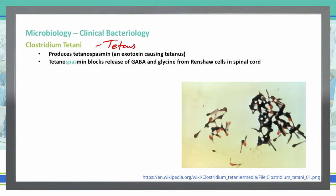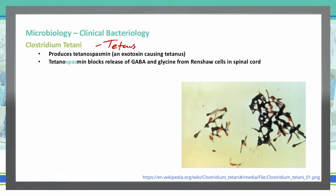Tetanospasm actually blocks the release of GABA and glycine from the Renshaw cells in the spinal cord. We are blocking GABA and glycine, which are inhibitory neurotransmitters, causing the spasm — an unregulated contraction of the muscles. You can see a picture here on the right, and these almost look like tennis racket shapes with their spores on them — that is Clostridium tetanii forming those spores, and the red is the spore.